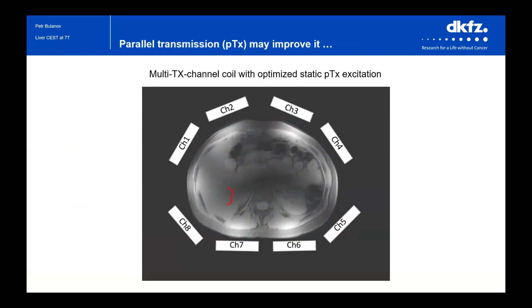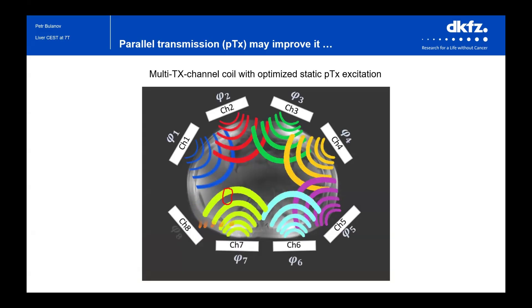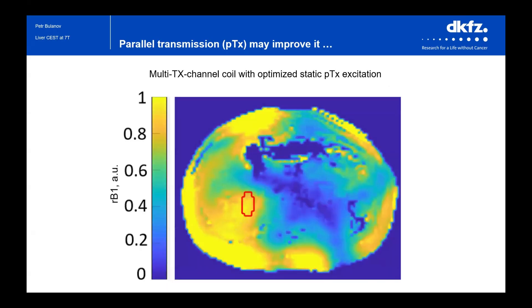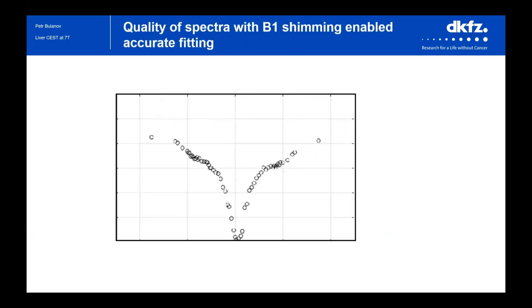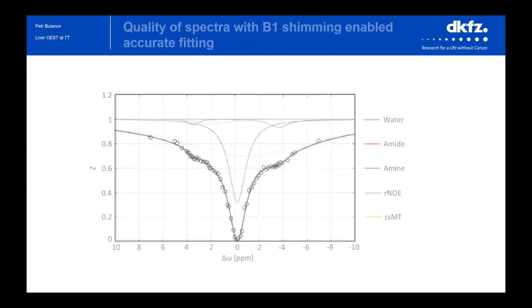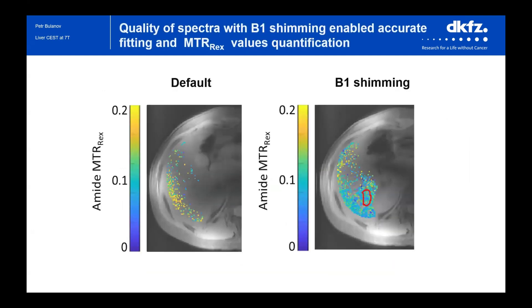we can optimize our signal in some desired region by changing the pulses of each individual coil element, which gives us much higher signal in the desired region and spectra of good quality, which we can approximate and calculate corresponding contrasts.